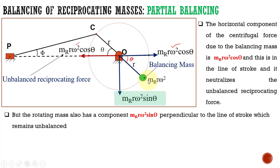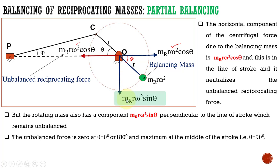We wanted to balance the system by adding the rotating mass, and we are able to balance the unbalanced reciprocating force. But we have got another problem due to the unbalanced vertical component of centrifugal force, which acts perpendicular to the line of stroke. This vertical component becomes zero when θ = 0° or 180°, because sin0° = 0 and sin180° = 0. And this value becomes maximum when it reaches the middle of the stroke, where θ = 90°, so sin90° = 1, giving a maximum amplitude of mrω².